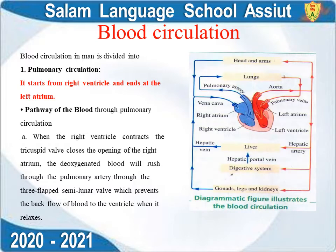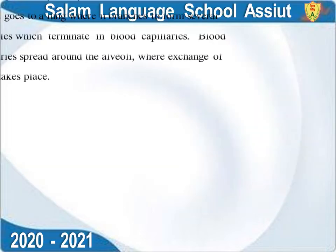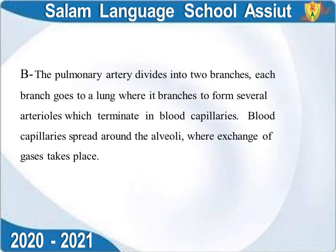The pulmonary artery divides into two branches, each branch going to one lung. The pulmonary artery further divides to form smaller arteries which terminate in blood capillaries.